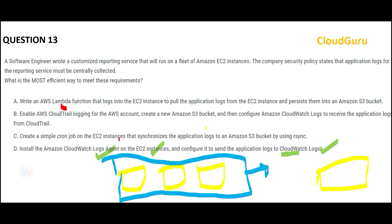Option A says write a Lambda function that logs into the EC2 instance to pull the logs and put them in an S3 bucket. Lambda alone cannot cross network borders to get into EC2. Also, if AWS provides a ready-made mechanism, do not build a custom solution — that is reinventing the wheel. From a certification standpoint, AWS wants to check your AWS knowledge, not how creative you can be with product development.